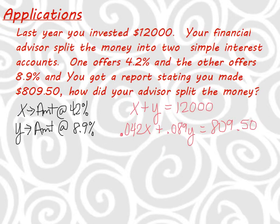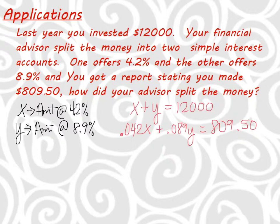We're not going to solve this one today, but it's set up nicely for either substitution — get x by itself from the first equation and substitute — or for elimination. You could take the first equation times negative 0.042 and that would make the x terms drop. There are ugly decimals, but you're going to your calculator anyway.